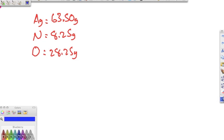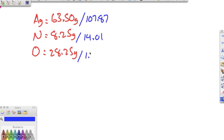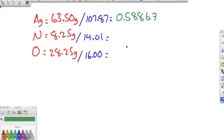After we get into grams, our next step is to divide by the atomic mass on the periodic table. Silver is 107.87, nitrogen is 14.01, and oxygen is 16.00. Dividing those out, I get 0.58867 for silver, 0.58887 for nitrogen, and 1.76562 for oxygen.